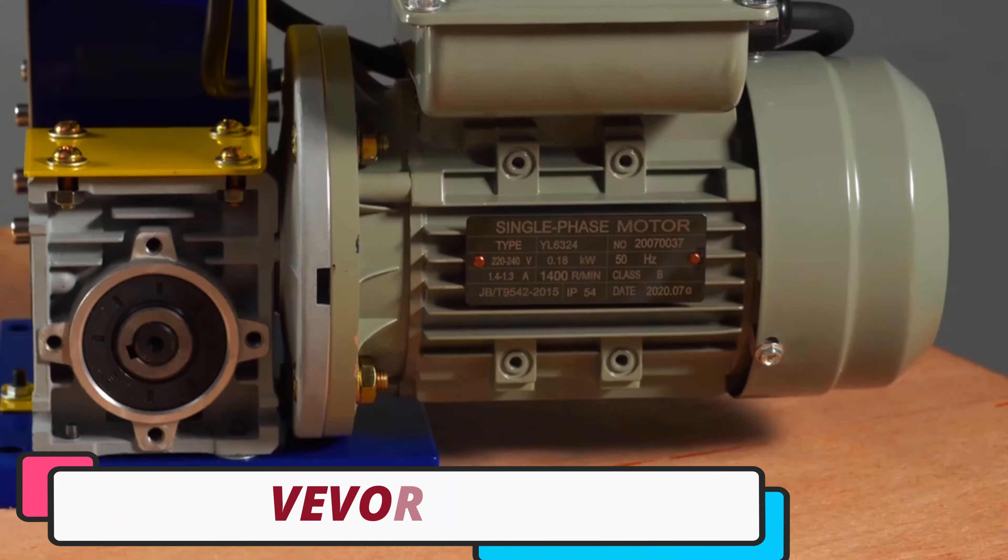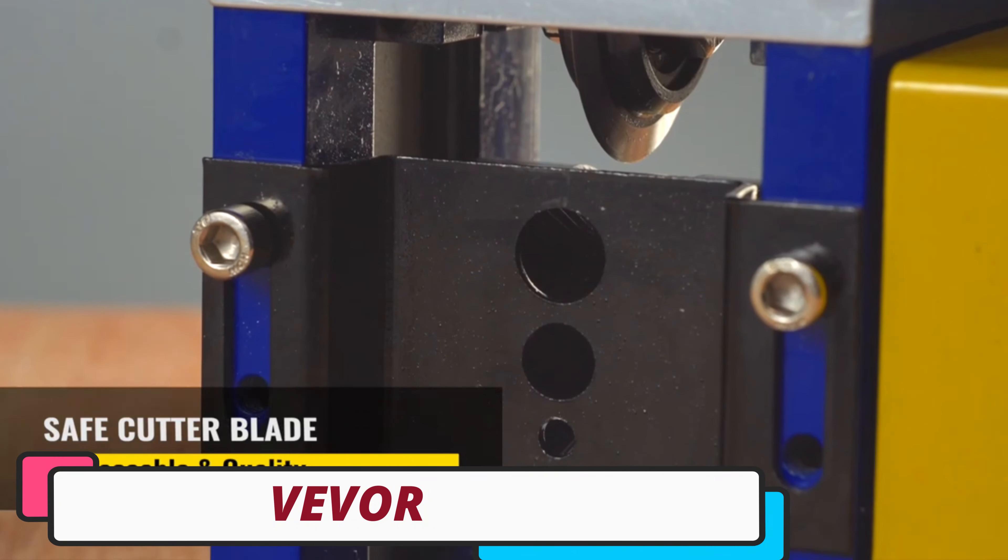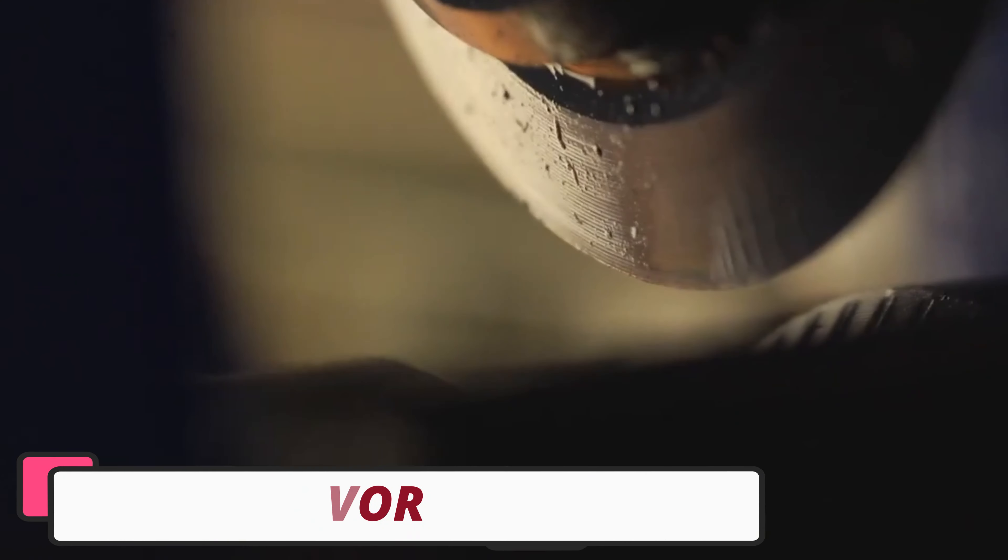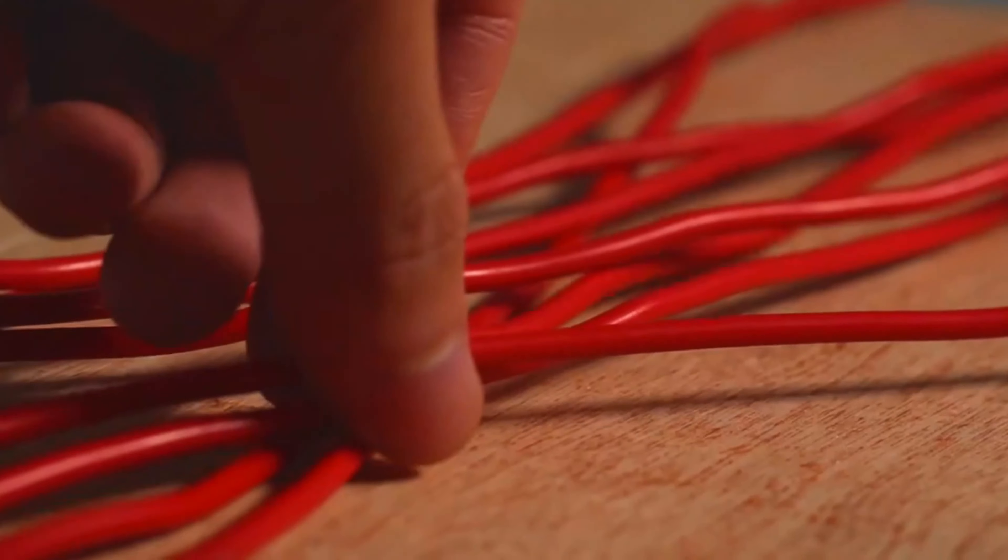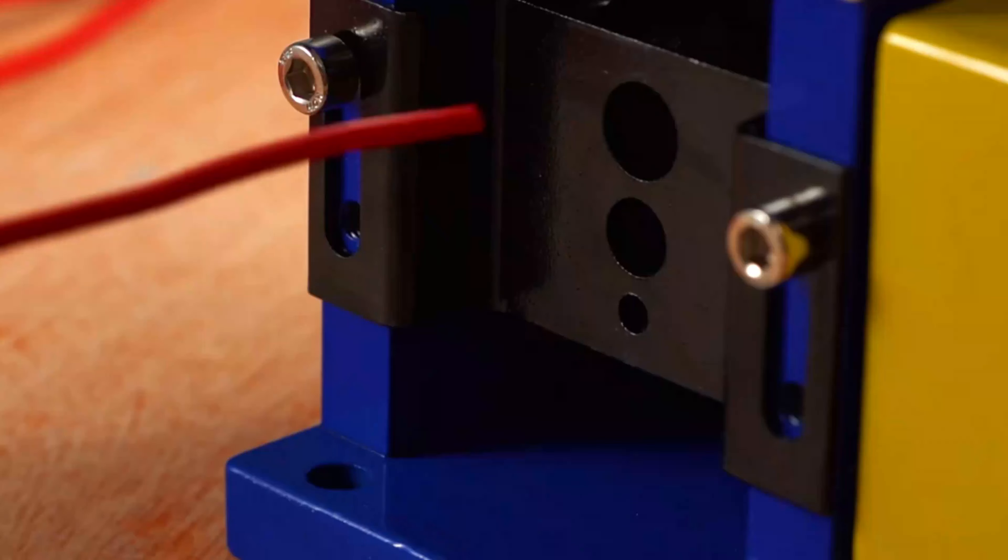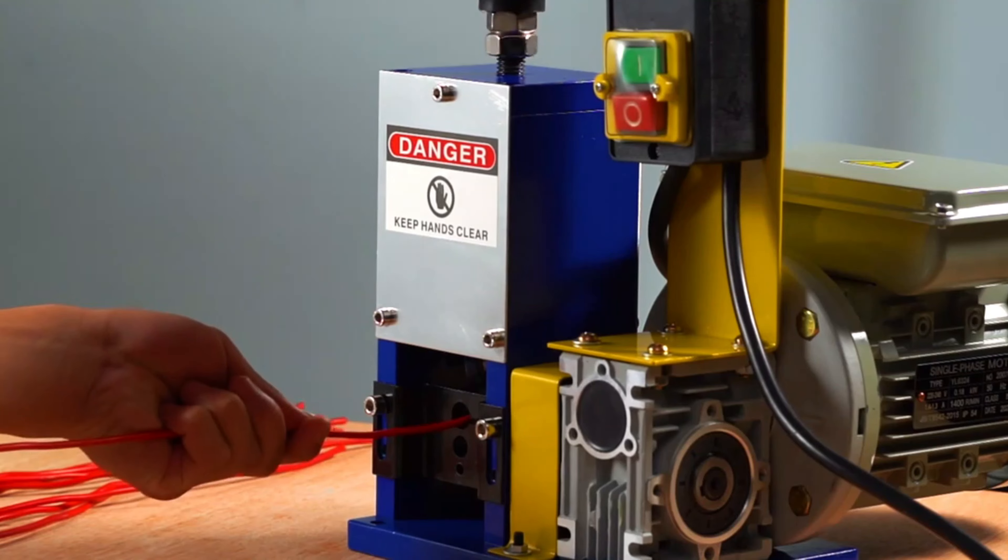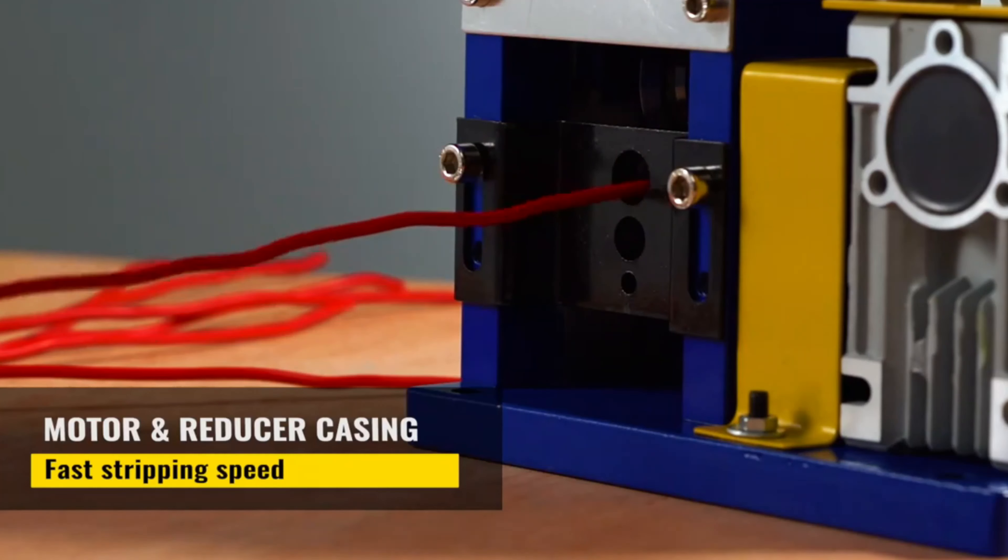Number 1: VEVER Wire Stripping Machine. The VEVER Wire Stripping Machine is a reliable tool for professionals and DIY enthusiasts, offering dual-voltage options for easy integration into various work environments. Its primary function is to strip electric wires with precision and efficiency, handling various wire sizes and types.